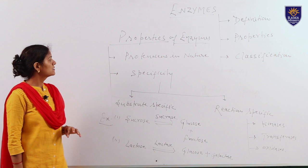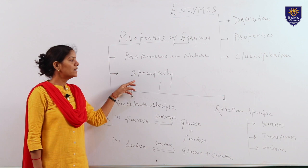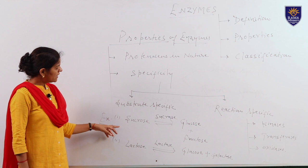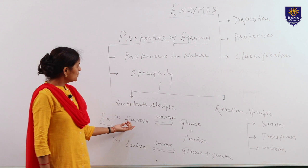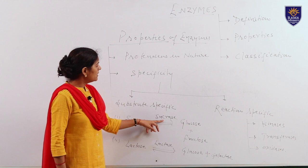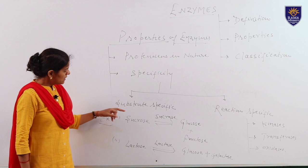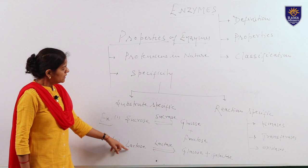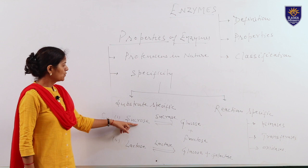The second property of enzyme is that they are specific in their function. They may be substrate specific or they may be reaction specific. In case of substrate specificity, I have given two examples. In the first example, sucrose on hydrolysis gives one molecule of glucose as well as one molecule of fructose. Here, sucrase is the enzyme which is particular for the substrate sucrose. In the second example, lactose on hydrolysis gives glucose as well as galactose. Here the enzyme is lactase and its substrate is lactose. Lactase can never take part in the hydrolysis of the sucrose substrate.